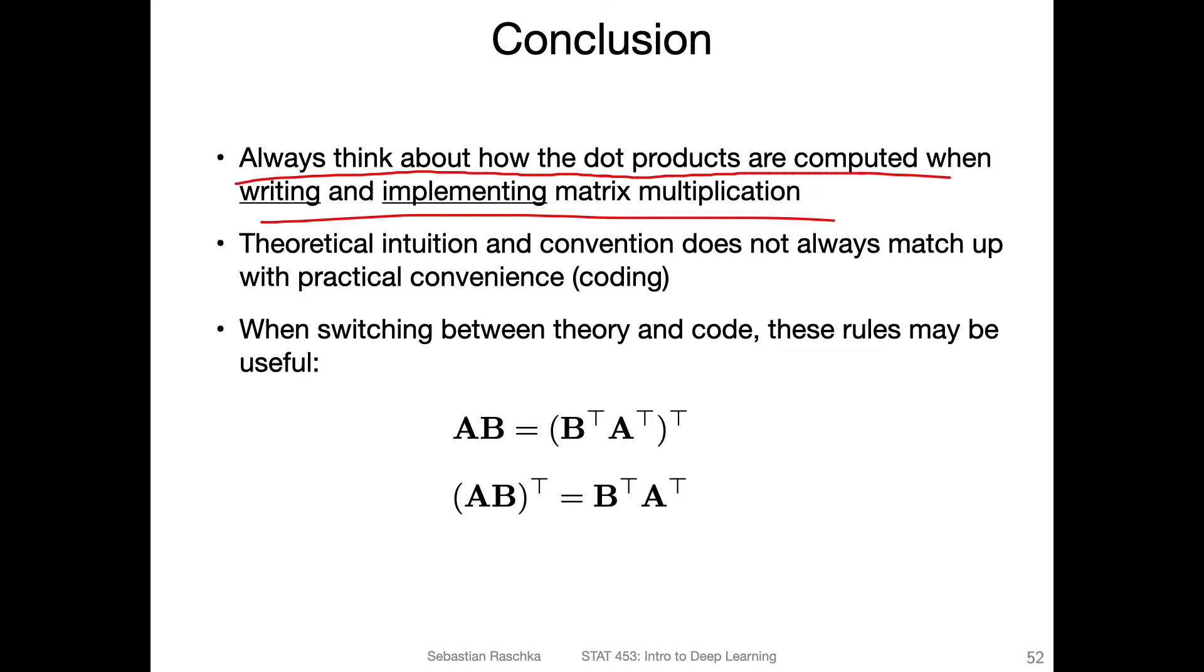Things may compute because dimensions match, but it's not computing what you wanted it to compute. It's always important to write down what the dimensions are and what you're computing and what you expect. Theoretical intuition and convention, like having the w in front as the transformation matrix, does not always match up with practical convenience like when we write things in code.